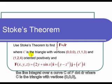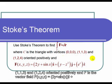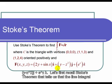where C is the triangle with vertices (0, 0, 0), (1, 1, 3), and (1, 2, 4), oriented positively, and f is the vector field f(x, y, z) is equal to (2y + sin x)i + (y - z²)j + e^z k.